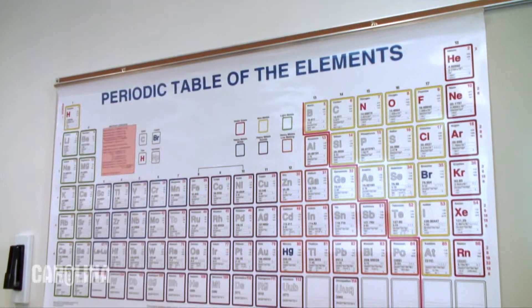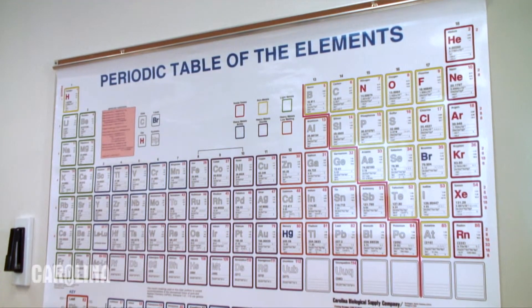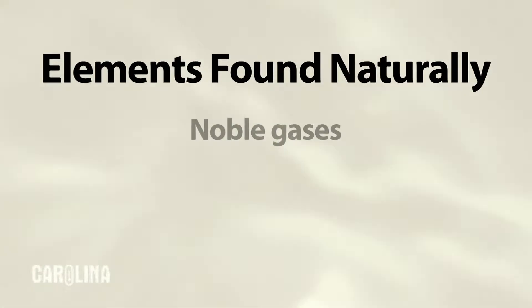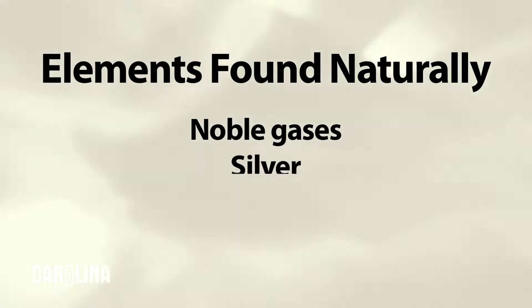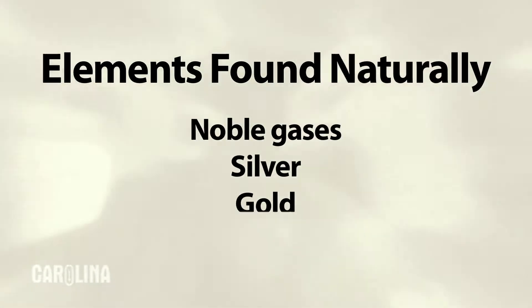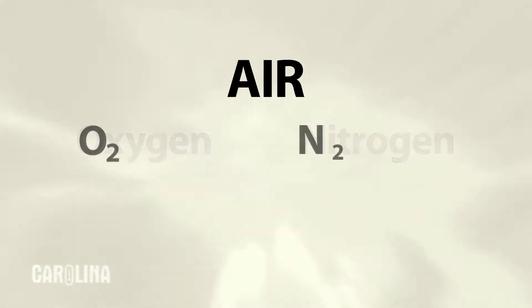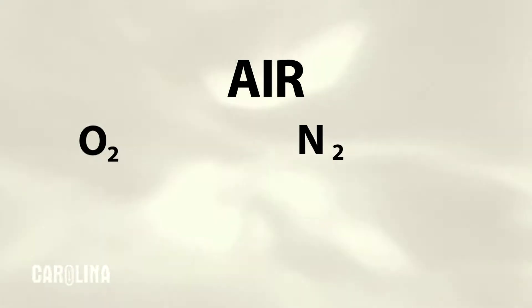Typically, all matter we encounter in our everyday lives exists as a compound or chemical combination of multiple elements. Elements found naturally include the noble gases and the precious metals silver, gold, and platinum. In air, we find oxygen and nitrogen as molecules combining two atoms of each element. Every other element is found in a compound. In these demonstrations, we'll see how several of these elements can be isolated from their compounds.